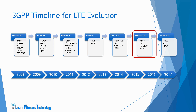Release 13 saw a lot of new features completed, including completion of specifications for mission critical services. There were also enhancements to existing features: Carrier Aggregation was planned to use up to 32 carriers, Licensed Assisted Access was used to enable unlicensed spectrum to be used with mobile operators, and improvements in MIMO technology to further improve radio propagation.